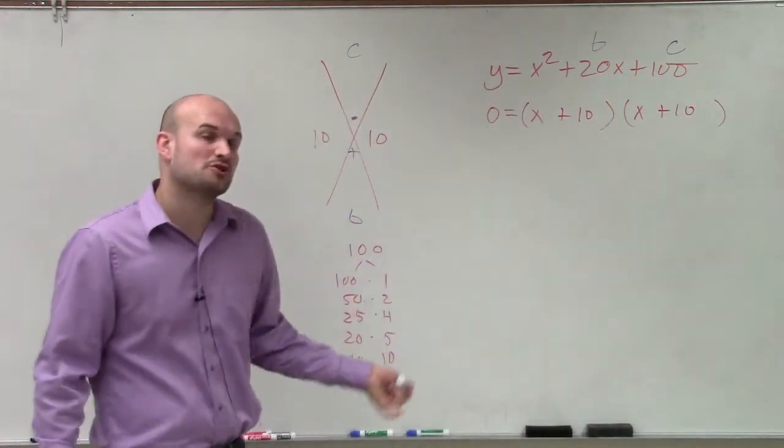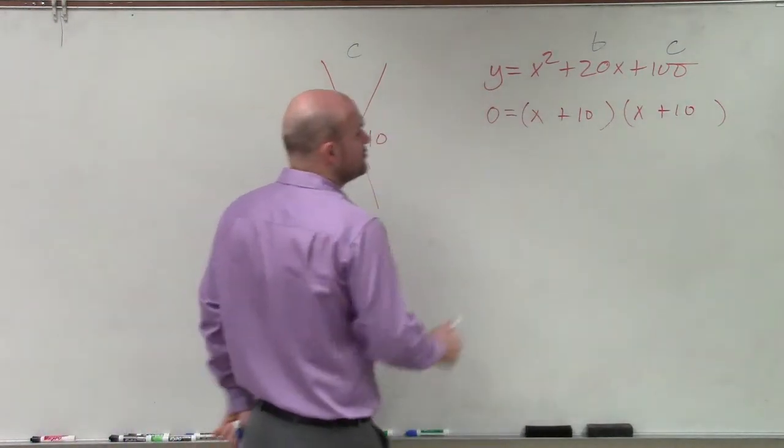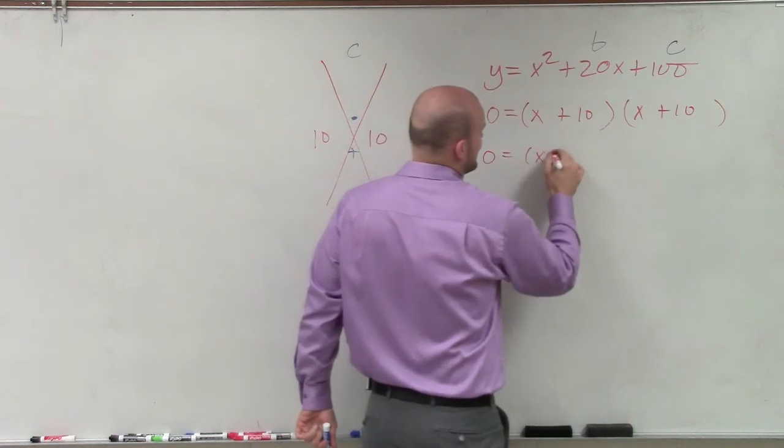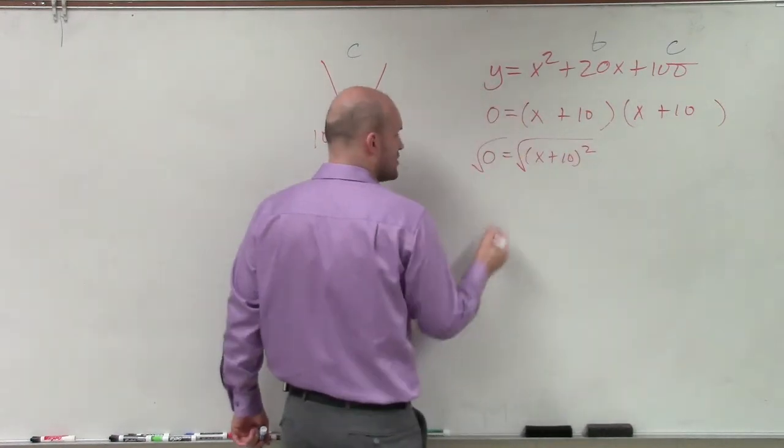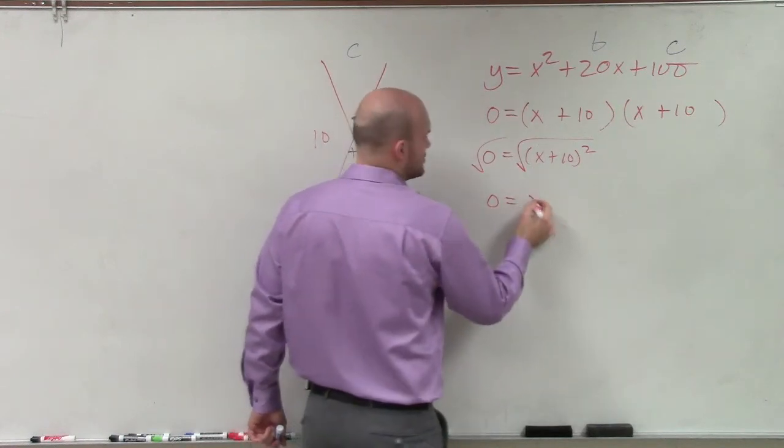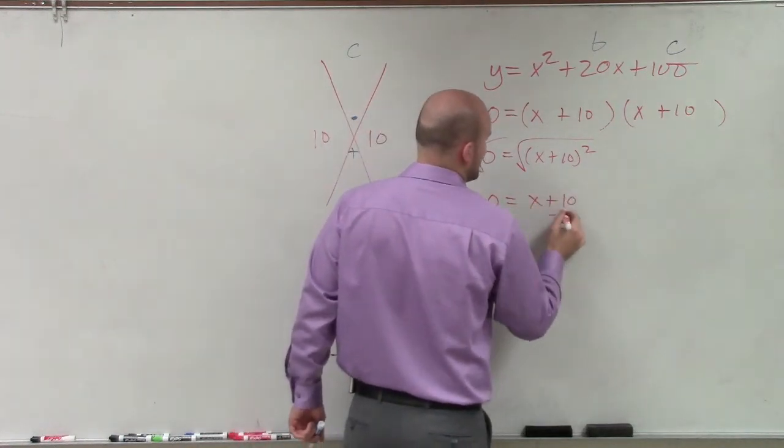Now, again, you can apply the 0 product property. You can also use the square root method and rewrite this as x plus 10 squared. So therefore, then, you can undo square root of both sides. Square root of 0 is just 0. So you're left with x plus 10.